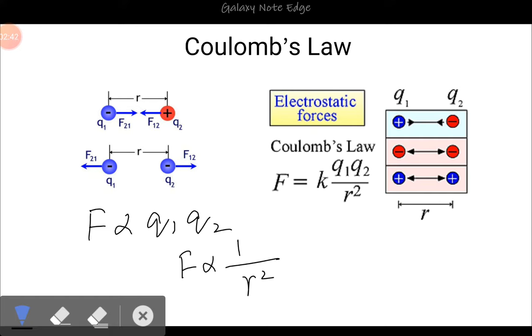So this law resembles the law of gravitation given by Newton, in which the force of attraction between two masses was directly proportional to the product of the masses. This is very similar to that. If we combine these two, it will be F is proportional to q1 q2 over r squared. And when we remove the sign of proportionality, this k is the constant which was studied in class 10.